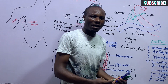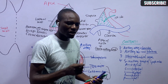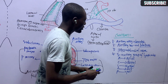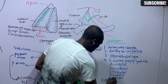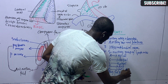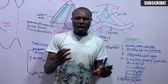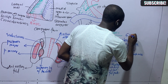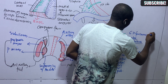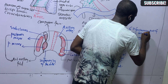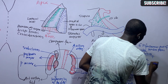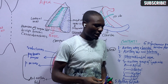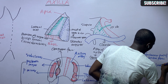Many structures pass through the axilla, so it is filled with fat to prevent friction among these delicate structures — this is called the axillary fat pad. The sixth content is the infraclavicular part of the brachial plexus, which is the part lying below the clavicle. The seventh content is loose or areolar connective tissue.